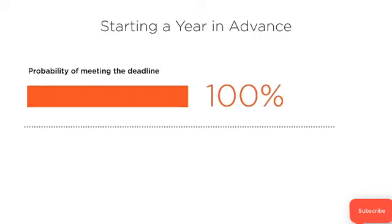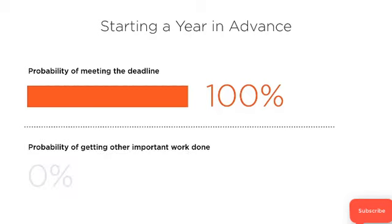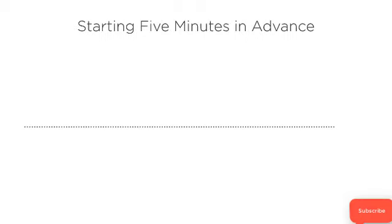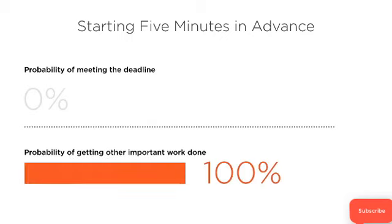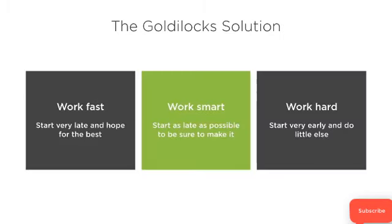Let's work with these extremes. You start work on your deadline a year in advance — the probability of you meeting the deadline is 100%, but the probability that you get other important work done is 0%. If you start five minutes before the deadline, the probability of meeting the deadline is 0%, and the probability of getting other important work done is 100%. Neither approach is optimal.